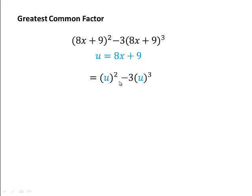This is now u squared minus 3. This got replaced, u cubed. And now, it should be easier to see that we have a GCF that we can factor out. We could factor out a u squared. So, u squared is now in the front. That would leave behind a 1 from the first term, minus 3, and an additional u on that second term.